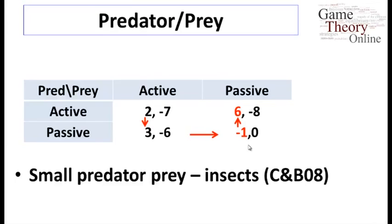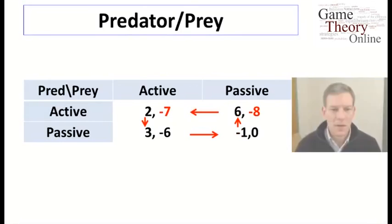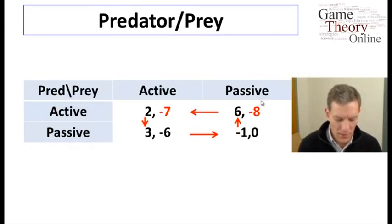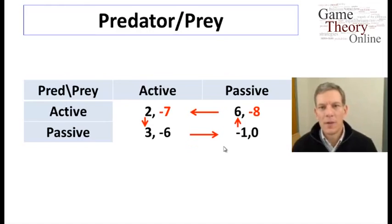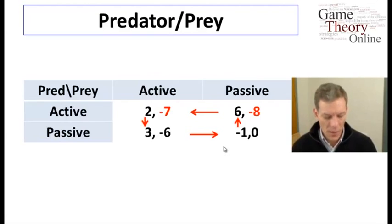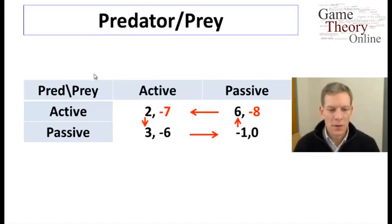But once the prey is going to be passive, then an active Predator catches a lot more prey, so the Predator wants to be active. And if the Predator is going to be active, then the prey also wants to be active — minus 7 is better than minus 8. So what we've got is a cycle where none of the combinations of actions form a pure strategy Nash equilibrium. No matter which pair of actions we put together, somebody wants to deviate because they have a better response.